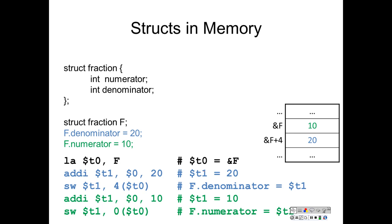In MIPS assembly, this would be equivalent to these instructions. Load address to $t0 of f, so $t0 is the base address of f. Initialize register $t1 to be 20, and then store the value of 20, initializing the denominator field of f to be 20. Similarly, to initialize the numerator field to 10, put 10 into a register, and then store that register containing 10 into the 0 offset from the address of f.